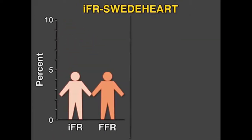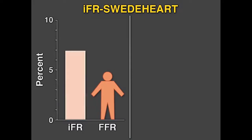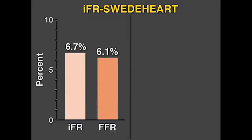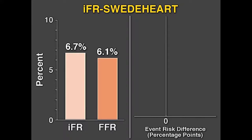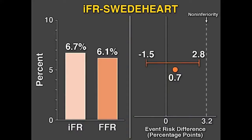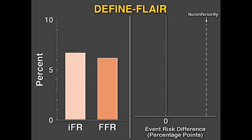In the IFR Sweetheart Study, the primary endpoint occurred in 6.7% of the IFR group and 6.1% of the FFR group, and the 95% confidence interval for the risk difference fell within the pre-specified non-inferiority margin of 3.2%.